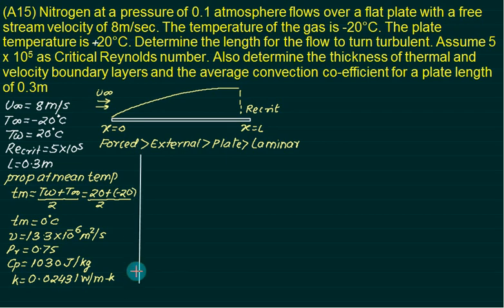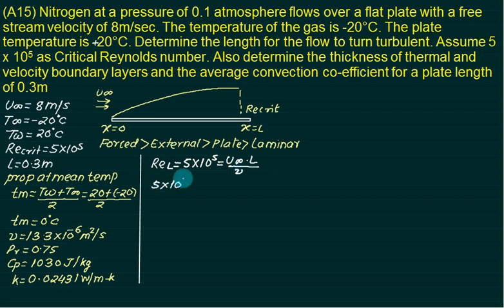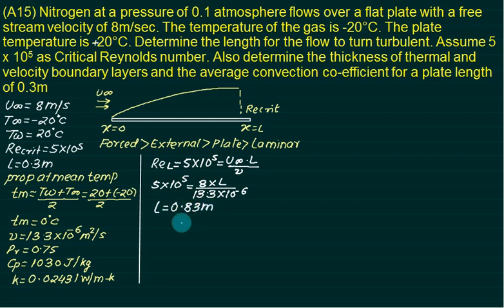Since the entire flow is laminar, we use the critical Reynolds number equation to find the length L at which turbulence begins. Setting ReL = 5 × 10⁵ = U_infinity × L / nu, with U_infinity = 8 m/s and nu = 13.3 × 10⁻⁶ m²/s, we get L = 0.83 meters. So up to 0.83 m the flow is laminar, and after 0.83 m it becomes turbulent.